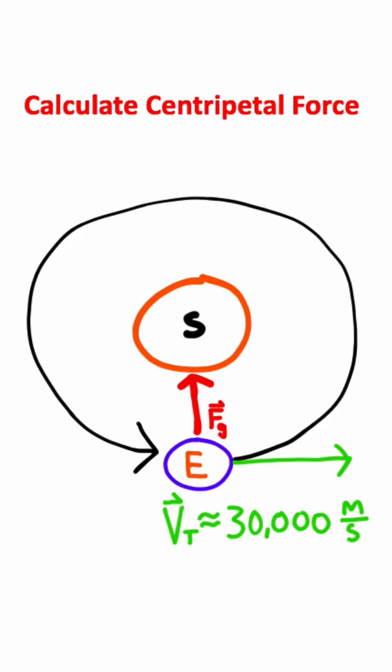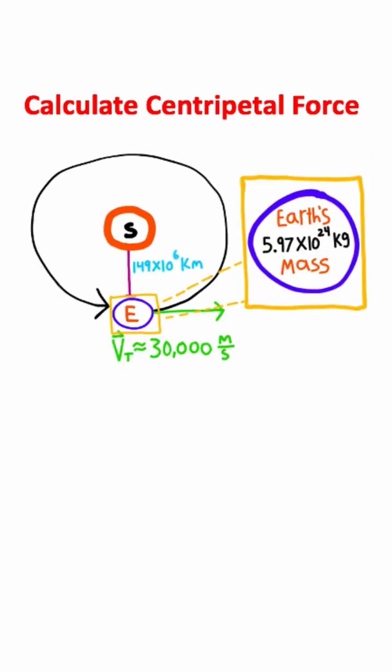We can calculate the centripetal force using the information given right here. Notice we have the distance between the Earth and the Sun, we have the tangential velocity of Earth approximately, and we have the Earth's mass. The way I'm going to calculate centripetal force is using this equation: mass times tangential velocity squared divided by the radius.